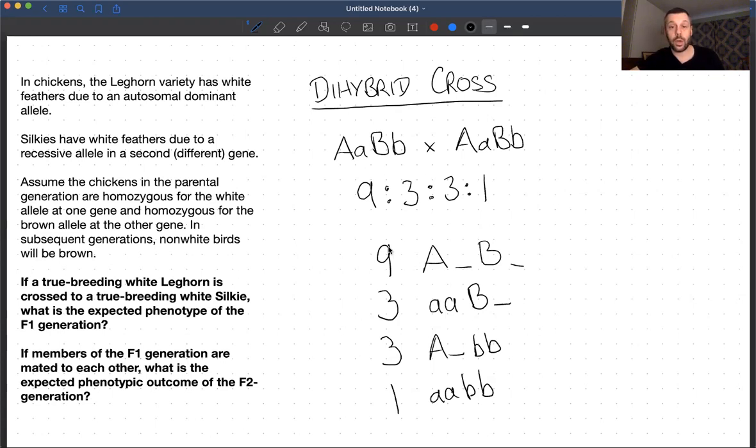But what you really need to do to answer these extensions of Mendelian genetics problems is essentially commit to memory how these phenotypic classes break down in a dihybrid cross. In other words, you need to be able to write what I just drew a square around.